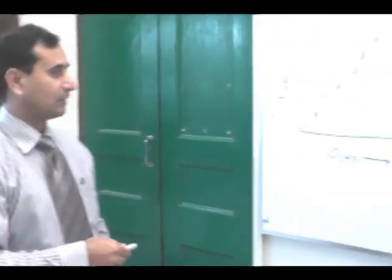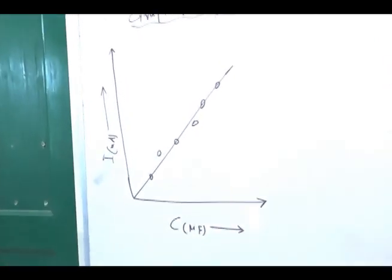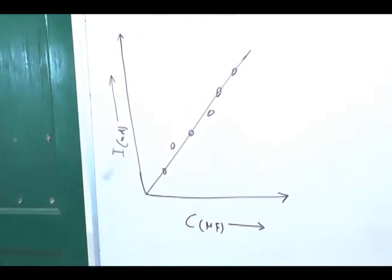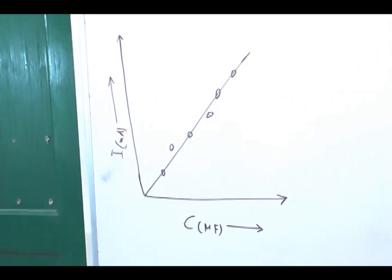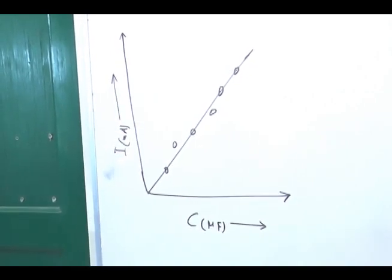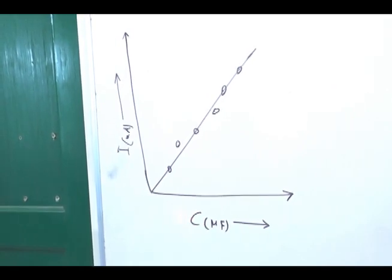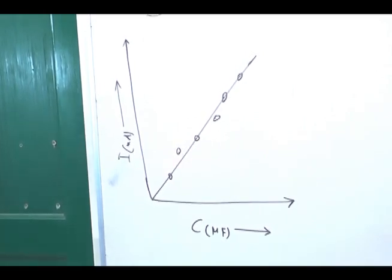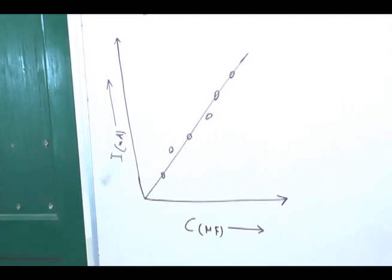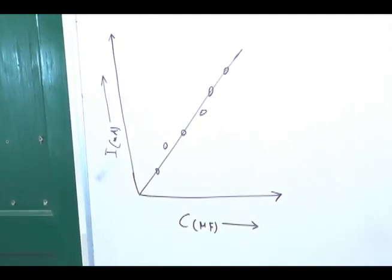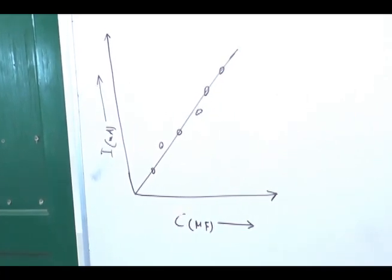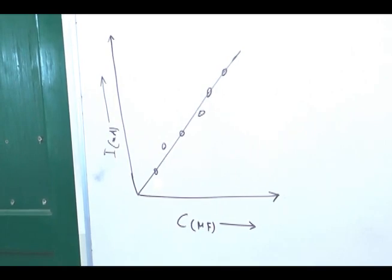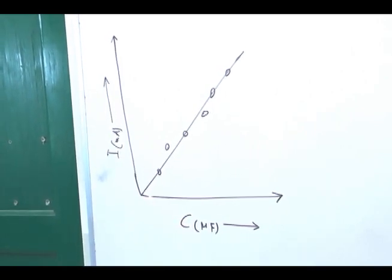At the end, we will draw the graph between current and capacitance. Capacitance is taken along the x-axis and current along the y-axis. Since the relation between current and capacitance is direct, we get a straight line graph. This straight line graph confirms that the relation between I and C is direct.